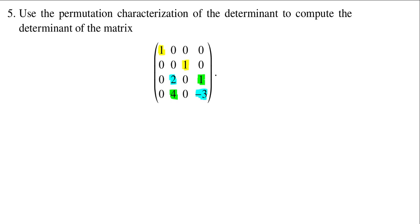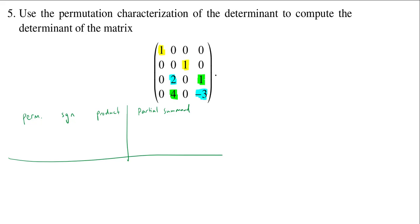So let's make a little chart. I'm going to write down the permutation that I chose, the sign — we'll explain how to get this — the product, and then we use all that to get a partial part of the determinant. This will be a partial sum of the determinant, and when we get all of them — there are only going to be two — we can compute the total, which is the determinant of our matrix.